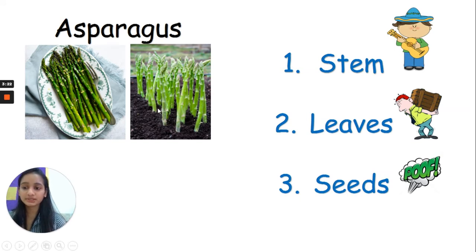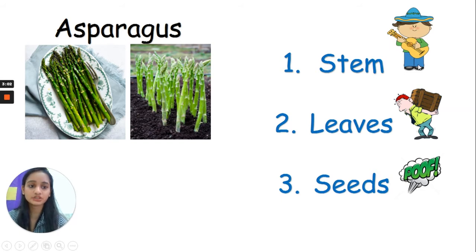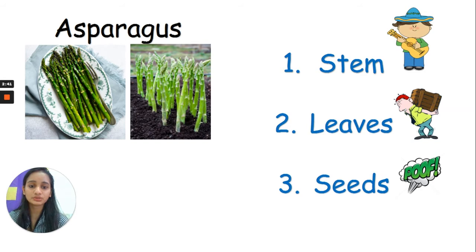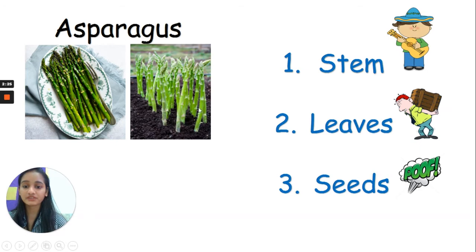The first vegetable is asparagus. Look at it carefully and identify if it is a stem, the leaves, or the seeds of a plant. If it's option one, you strum a guitar. If it's option two, you pick up a heavy load on your back. If it's option three, you disappear from the camera. One, two, three. If you were strumming a guitar, that's absolutely correct — it is the stem of a plant. Good job everybody!